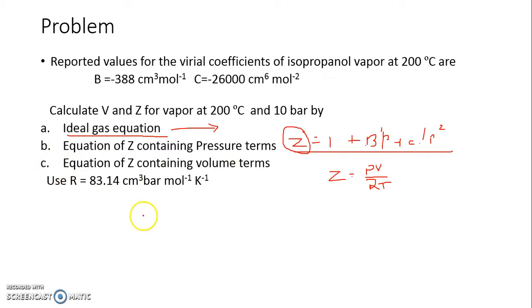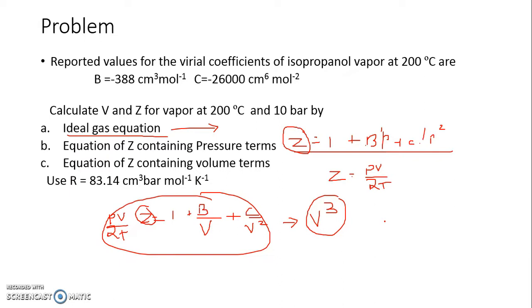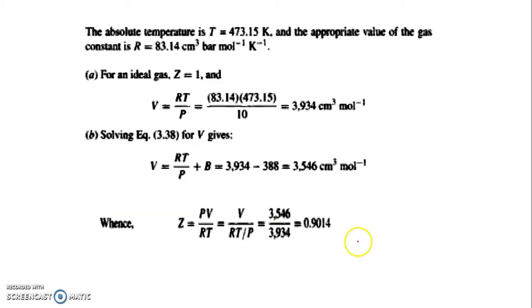For part C where Z is given as 1 plus B upon V plus C upon V square, this is the equation where you have on both the sides unknown terms. That is you don't know Z, you also don't know V. So convert Z into PV is equal to RT. Simplify this equation in form of V which will be cubic equation in V. Solve that equation using Newton-Raphson method or Pallender method with initial guess, starting guess as an ideal gas value, and you converge that for V.